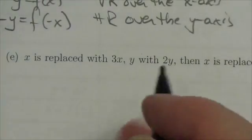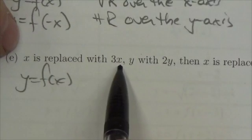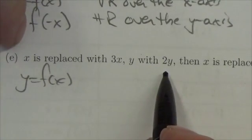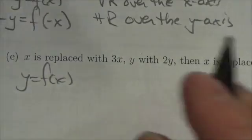Hi everyone. This question is asking what happens to y equals f of x when we replace x with 3x, y with 2y, and then we replace x with x plus 2 and y with y plus 1.